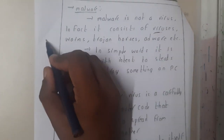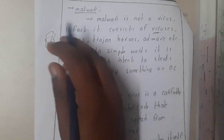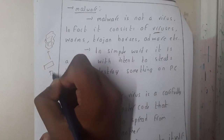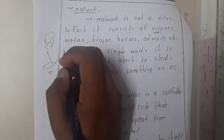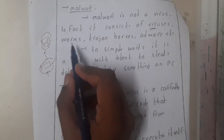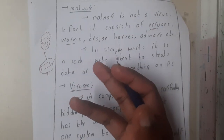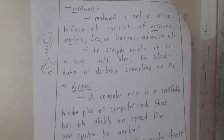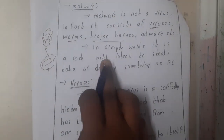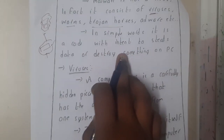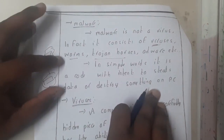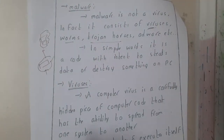Malware actually consists of viruses. If there are multiple viruses, we can say those are malwares. That is why whenever you perform a scan in your system it says 'found 10 malwares' — those are a collection of viruses. Malware consists of viruses, worms, Trojan horses, adware, etc. In simple words, it is code with the intent to steal data or destroy something on your PC.